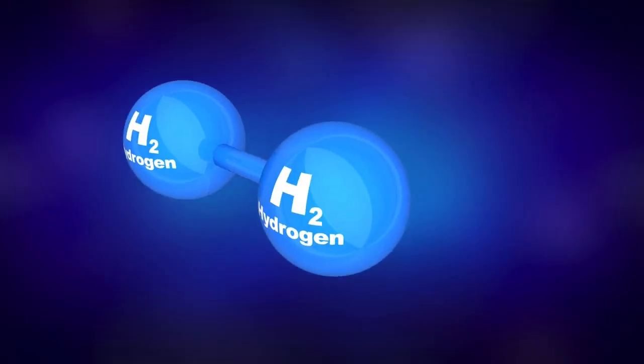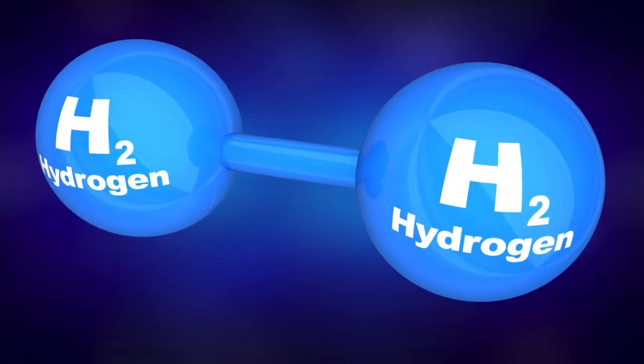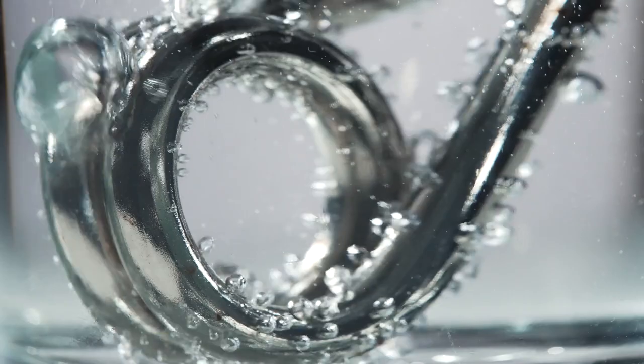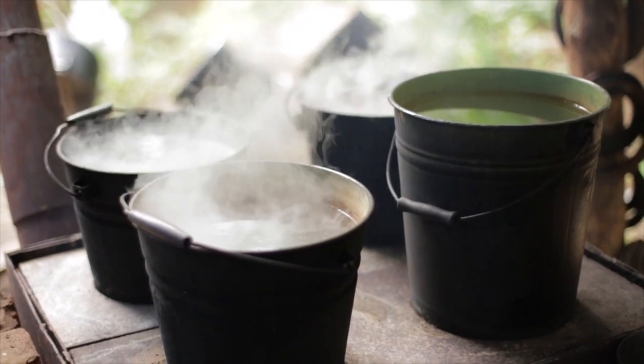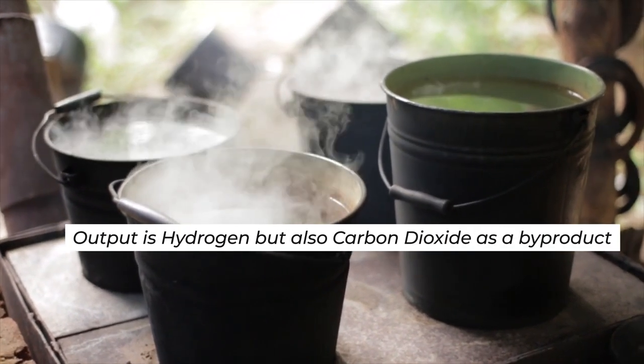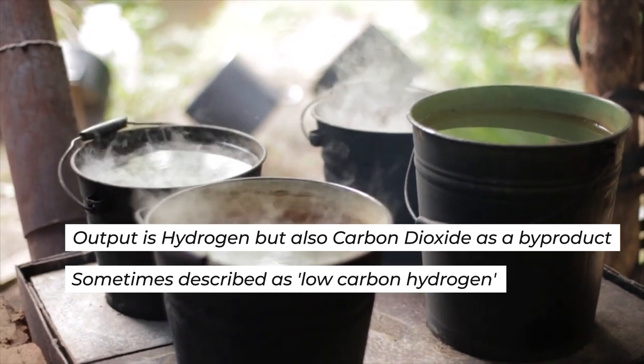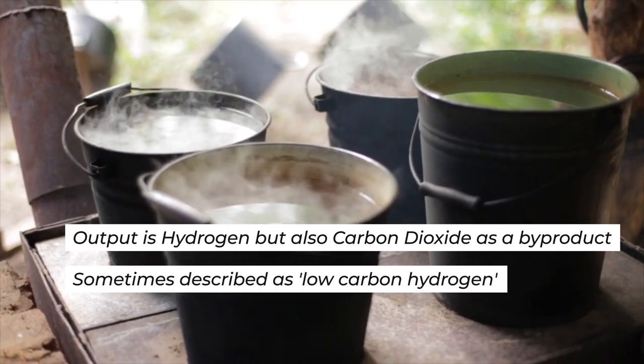Blue hydrogen is produced from natural gas, using a process called steam reforming, which brings together natural gas and heated water in the form of steam. The output is hydrogen, but also carbon dioxide as a byproduct. It is sometimes described as low-carbon hydrogen.